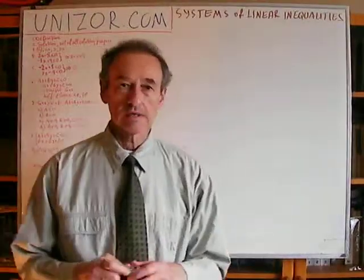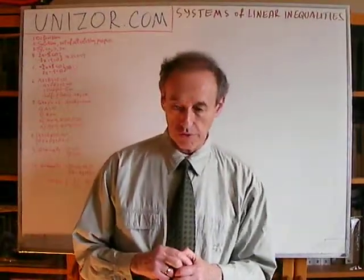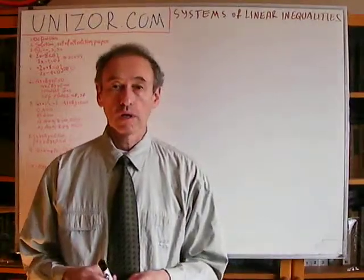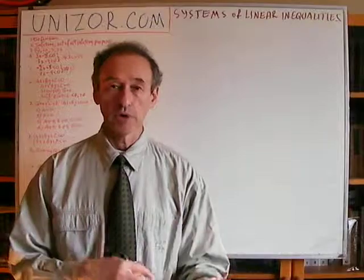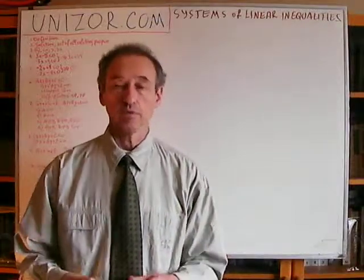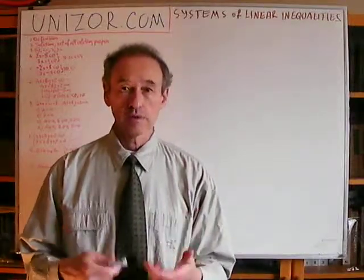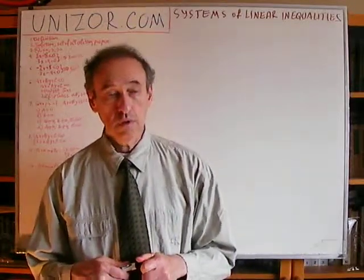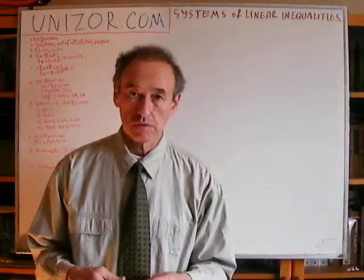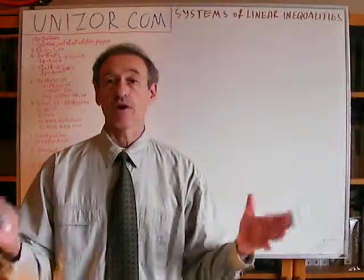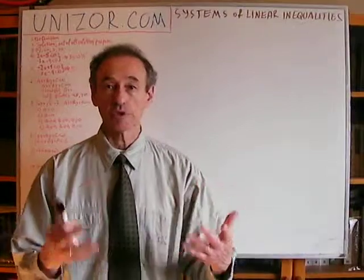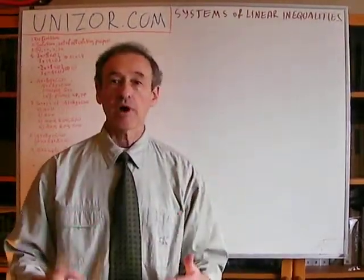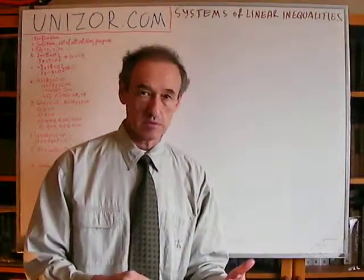So what is a system of linear inequalities? That's basically two or more greater-than, greater-than-or-equal, less-than, or less-than-or-equal conditions on a certain number of linear functions which depend on the same set of arguments. So let's say you have a set of arguments — it can be one argument, two arguments, or even 25 arguments — and you have a certain number of linear functions of these arguments.